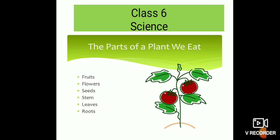In the first part of this chapter, I told you about two parts of the plant — stem and roots. So in this video, I will tell you about the other parts of the plant which we eat as food. So let us start.